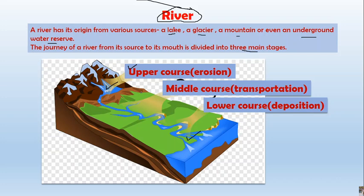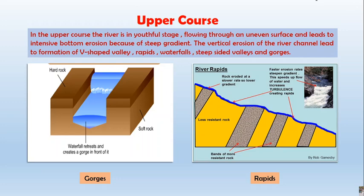In the upper course, the main activity of the river is erosion. Then comes the middle course, when the river enters the plain, where the main activity is transportation. The last stage is the lower course, near the river's mouth, where the main activity is deposition. In the middle course, besides transportation, the river also engages in some deposition, but deposition is more prominent in the lower course.